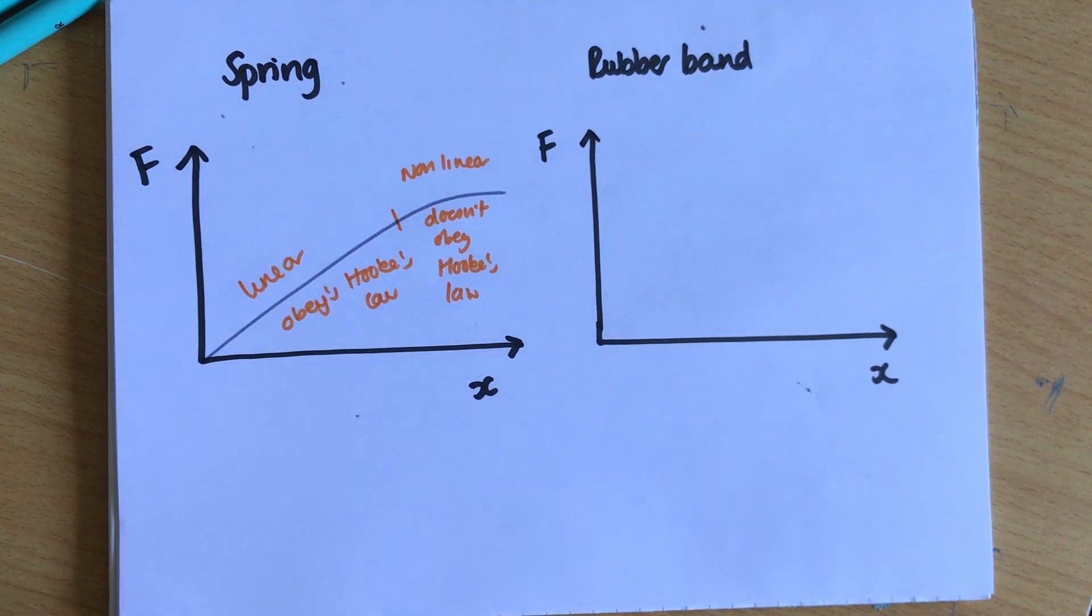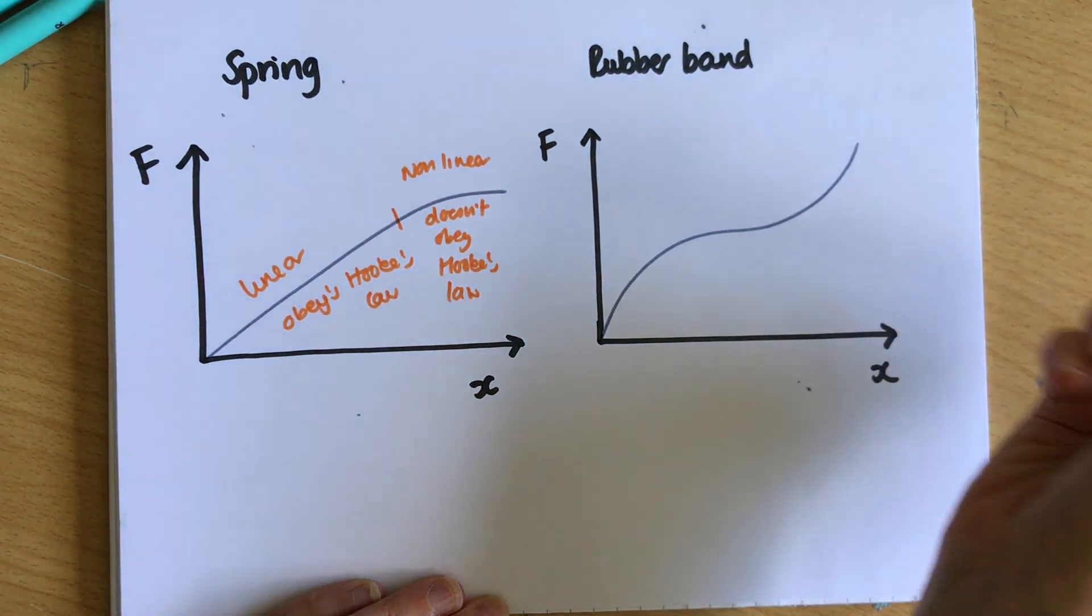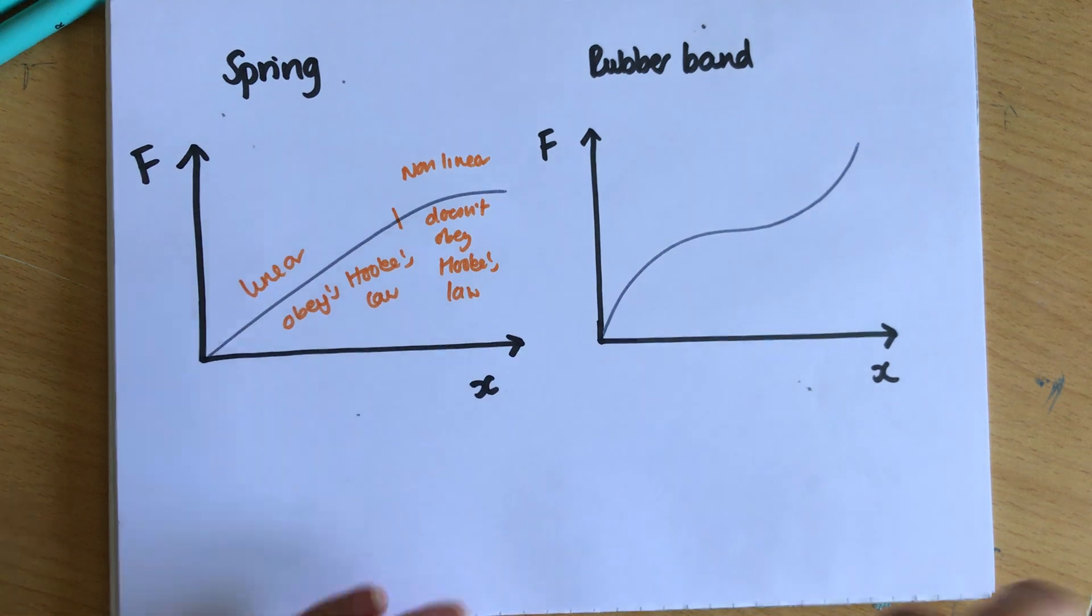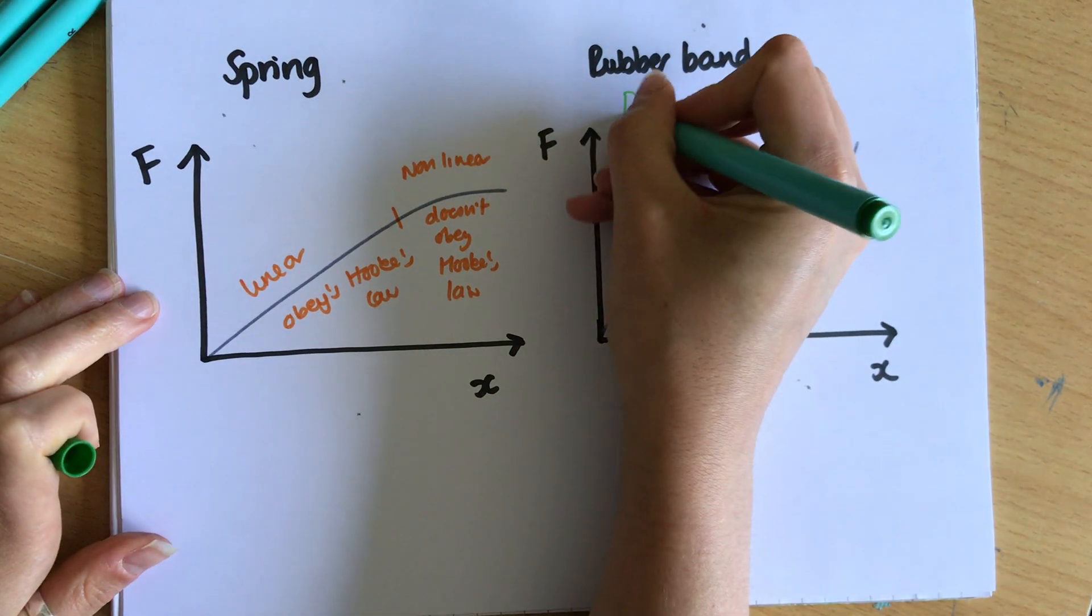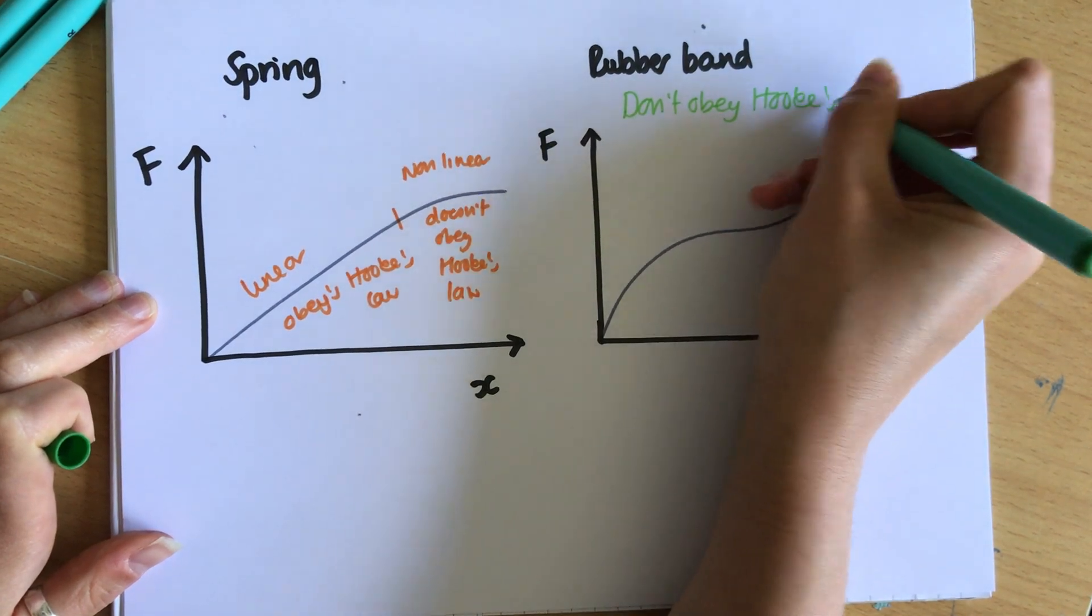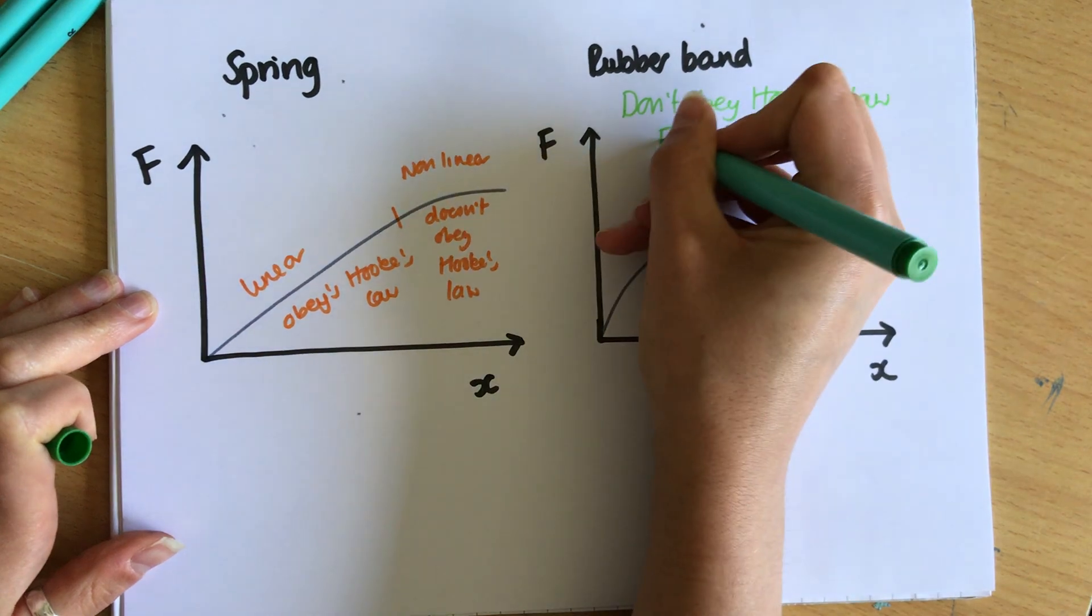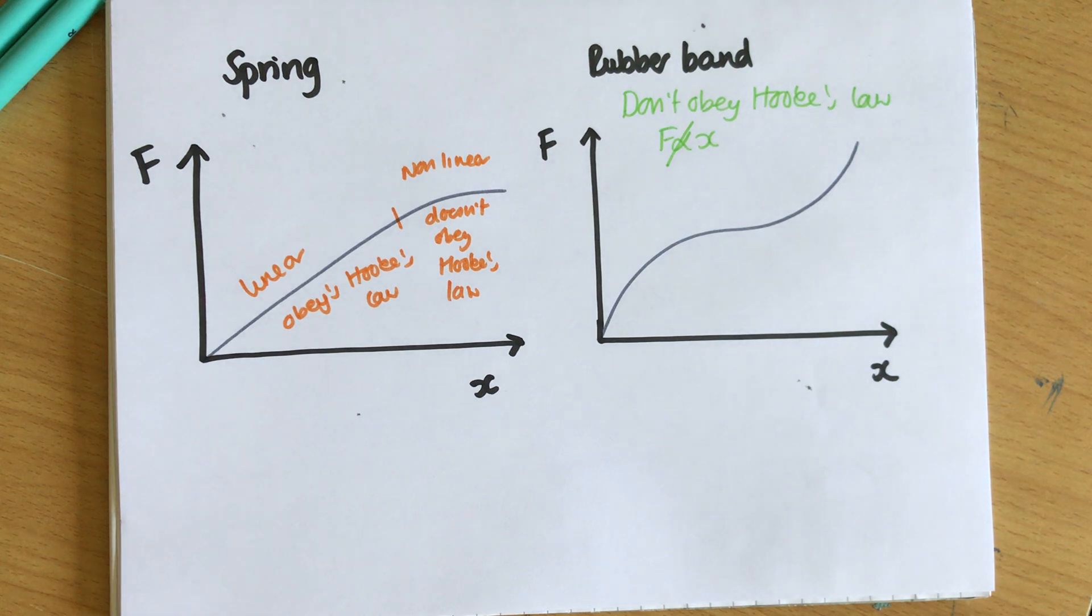And we'll see what we can do. So you get like a shape that looks like this and so it doesn't obey Hooke's law at all. Rubber bands don't obey Hooke's law because the force isn't proportional to the extension because it's not a straight line through the origin.